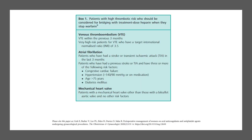So patients with high thrombotic risk who should be considered for bridging with treatment dose heparin when they stop warfarin. So venous thromboembolism, VTE within the previous three months. Very high risk patients for VTE who have a target INR of 3.5. AF patients, so patients who've had a stroke or transient ischemic attack in the last three months. Patients who've had a previous stroke or TIA and have had three or more of the following risk factors: congestive cardiac failure, hypertension, age above 75, diabetes mellitus. Mechanical heart valves, patients with a mechanical heart valve other than those with a bileaflet aortic valve and no other risk factors.